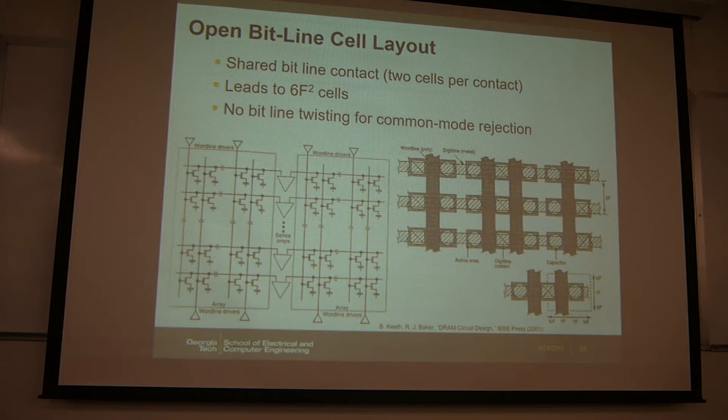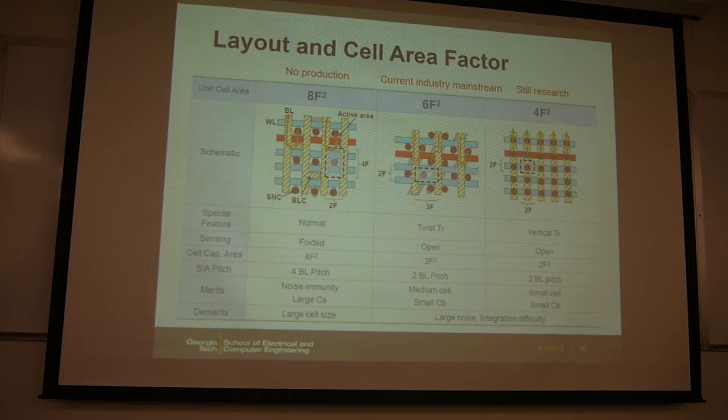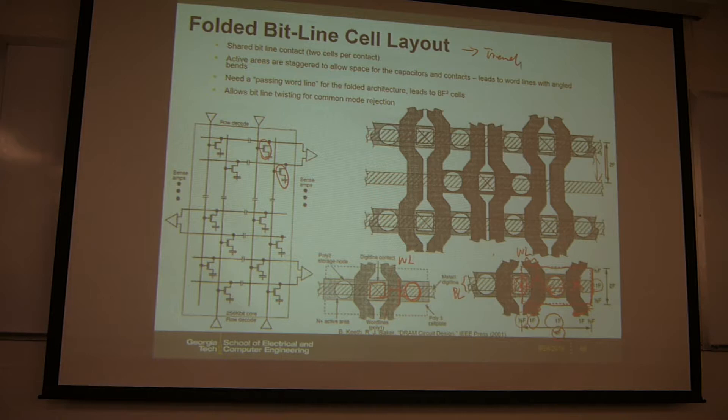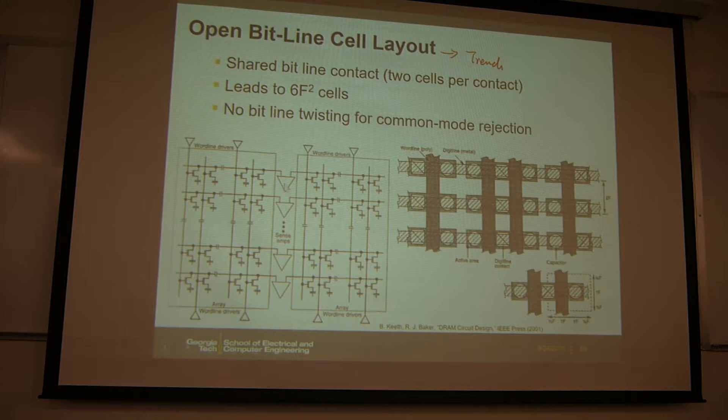We can also look at the open bitline cell layout — this one is also for the trench capacitor. For the open bitline architecture, as discussed, you share the sense amp between two arrays. This gives you a regular pattern where at every bitline and wordline intersection you have one cell, with no twisted locations.